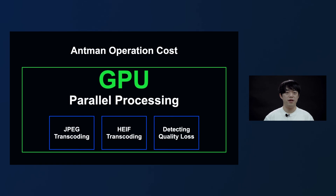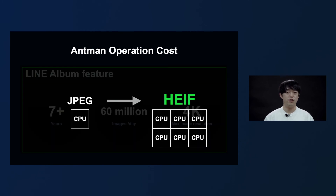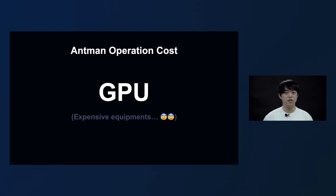For the next part, I will talk about the operation cost of Antman. Antman uses GPU to carry out JPEG transcoding, HEIF transcoding, and detecting quality loss. It uses GPU because the huge amount of images stored in LINE Album must be converted to HEIF in a short period of time. LINE Album has been in service for over seven years, approximately 60 million images are uploaded a day, and images with up to 4K resolution are saved. In order to convert a JPEG image to HEIF, hundreds of times the amount of computation was required compared to just saving in JPEG. Purchasing expensive GPU equipment did not fit the purpose of the project, which was to reduce storage expenses, so we tried to think of a different solution.